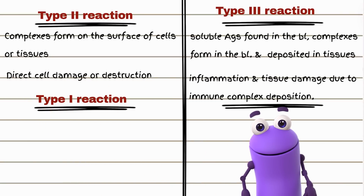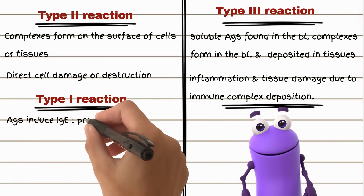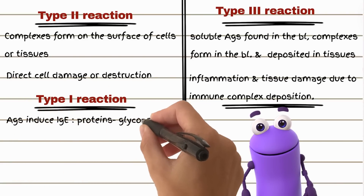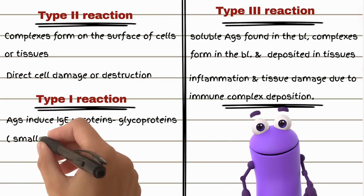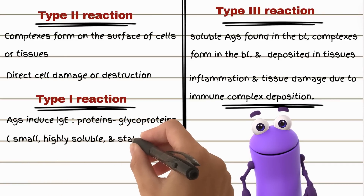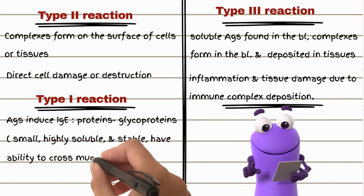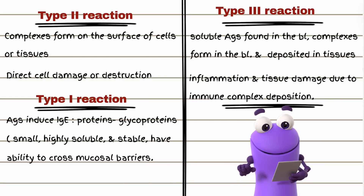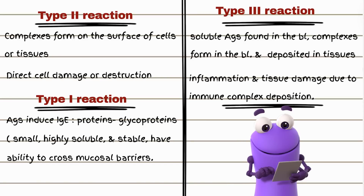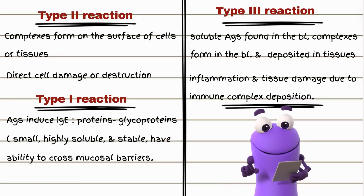Antigens that induce immunoglobulin E production are typically small, highly soluble, stable proteins or glycoproteins, often with the ability to cross mucosal barriers. Common examples include pollen, dust mite proteins, certain food proteins, and insect venom. They are often encountered at mucosal surfaces — respiratory and gastrointestinal — and processed by local dendritic cells, favoring a T-helper 2 response.